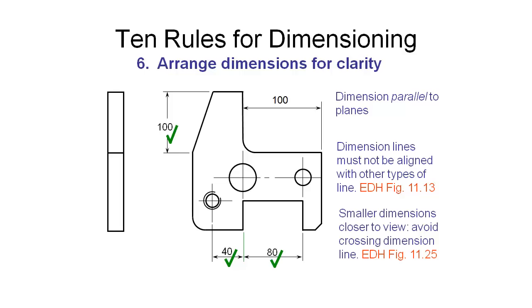When we're using multiple dimensions in the same region, we want to put the smaller dimensions closer to the view so that the larger dimensions can go around the outside of it. And this will avoid having our dimension and projection lines crossing over and creating any confusion. So that wouldn't be a recommended way of doing it. Much better to have the 100 below the 80 down here.